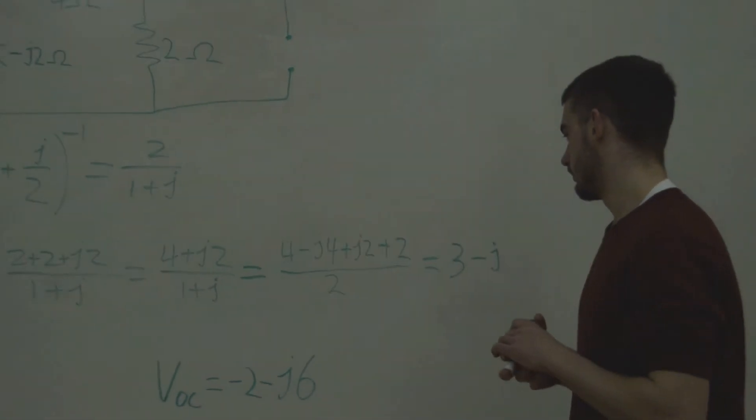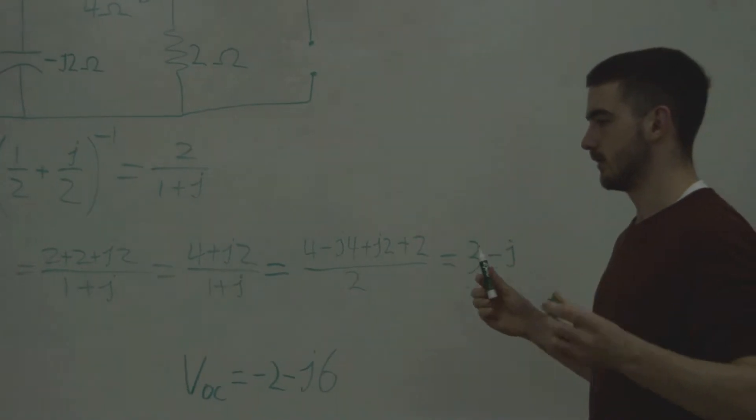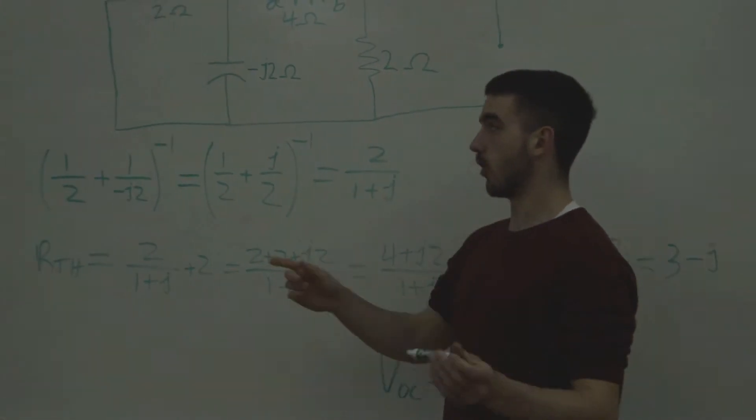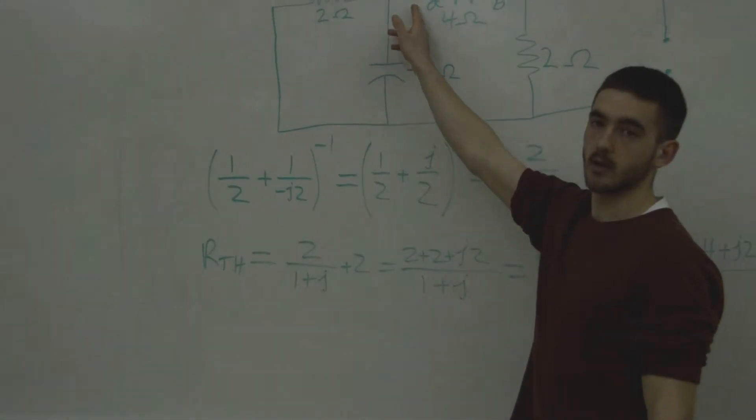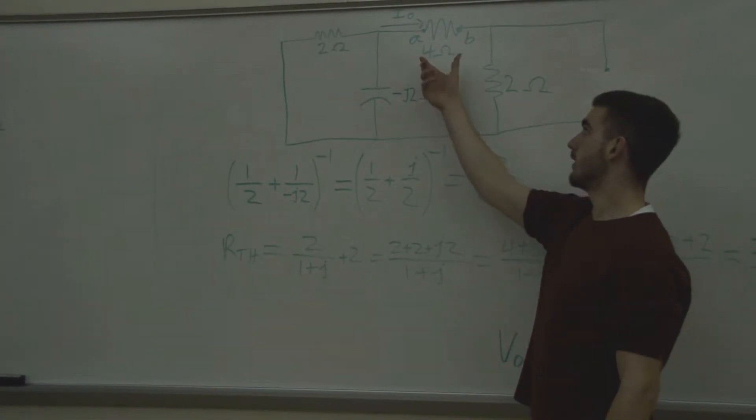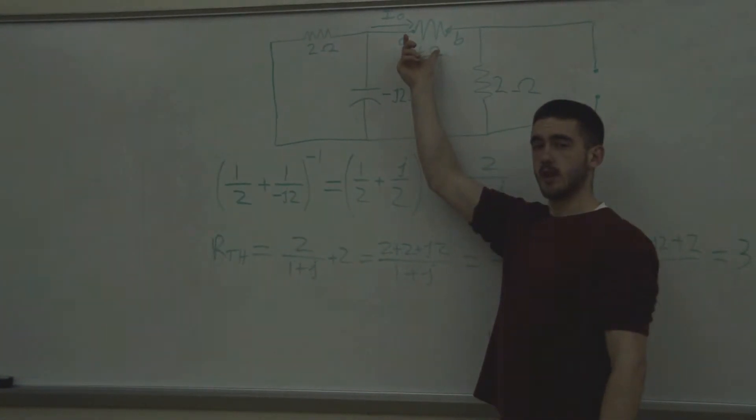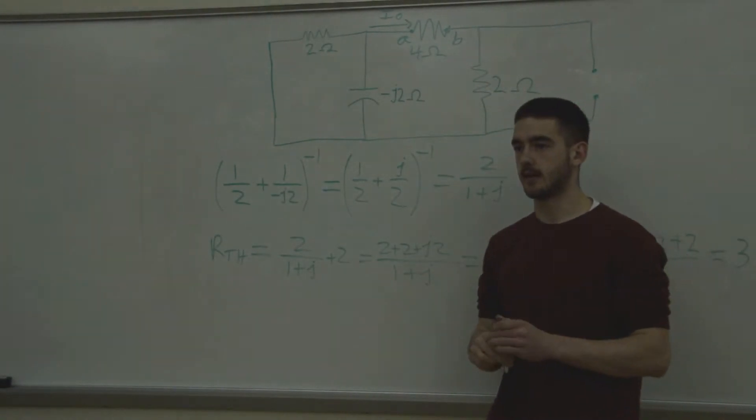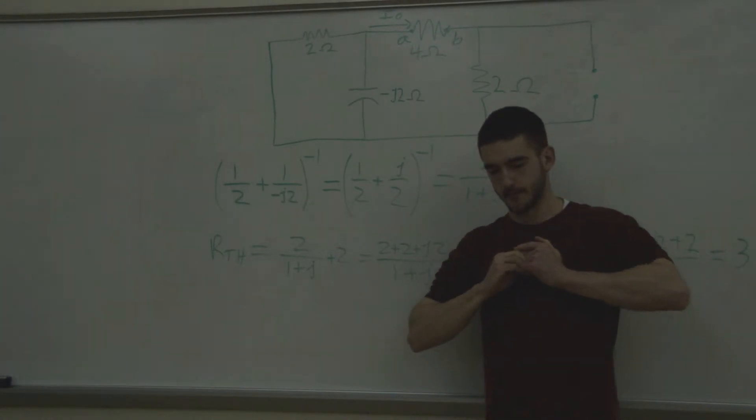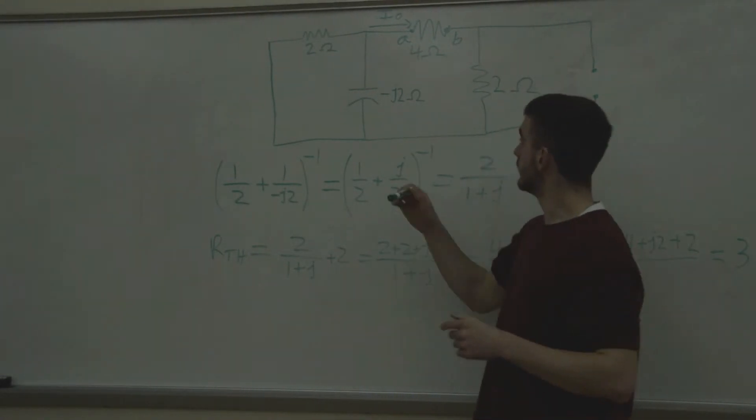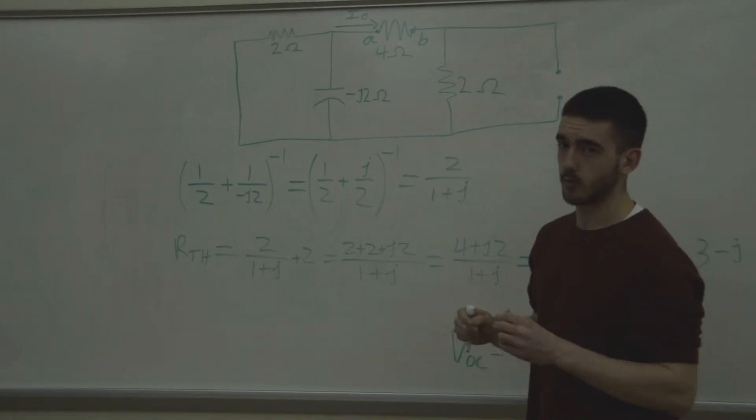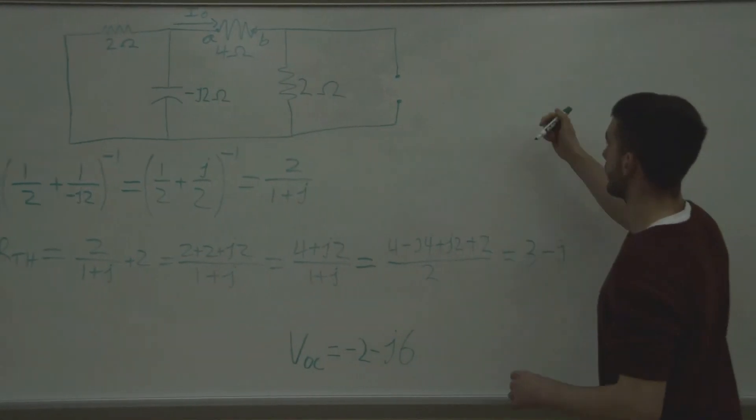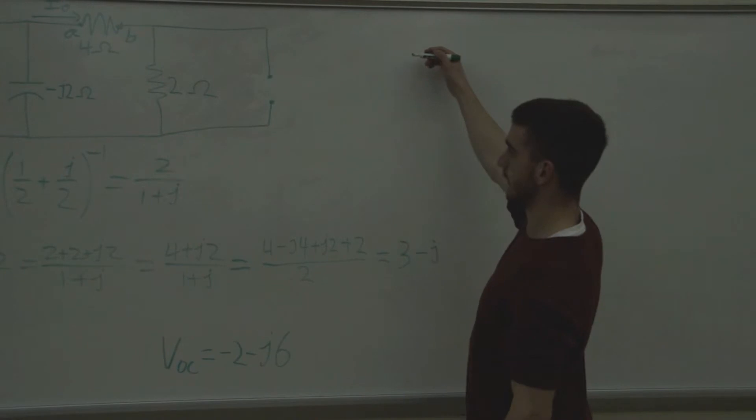So now what we need to do is find I-O. Remember the initial goal of the problem was to find I-O right here. So what we did is we found the open circuit voltage, and then we found the Thevenin resistance going through here. So what we can do is just take that, using our load resistance right here, the 4 ohms, we'll find the current. So let's redraw the circuit so we can understand what I just said.